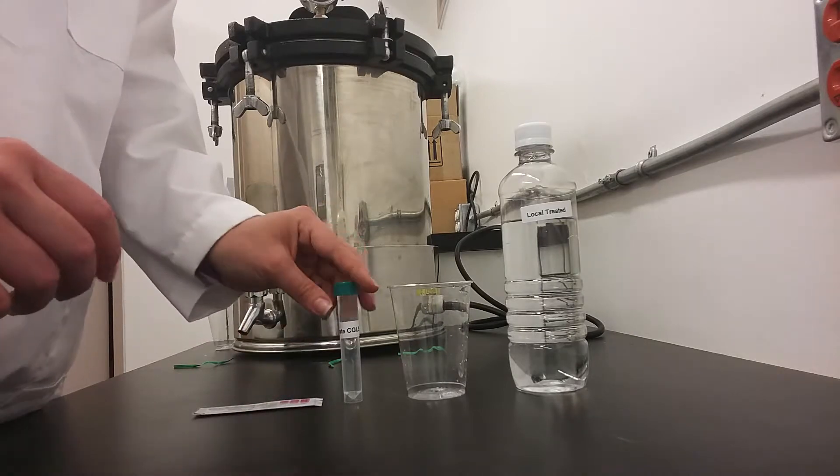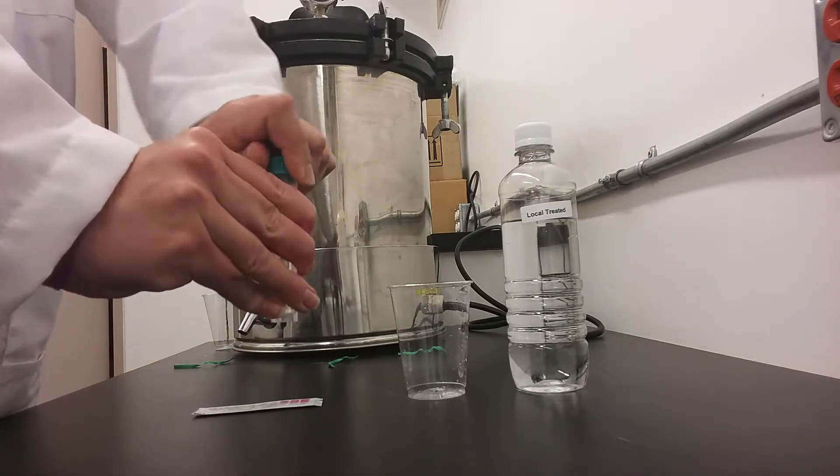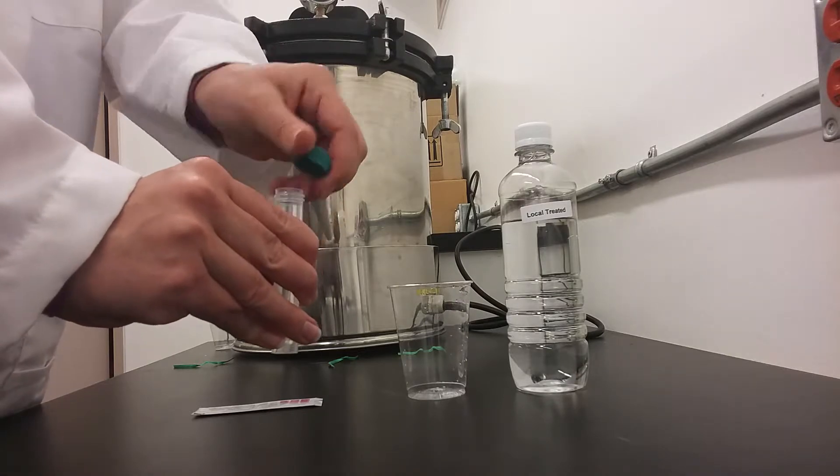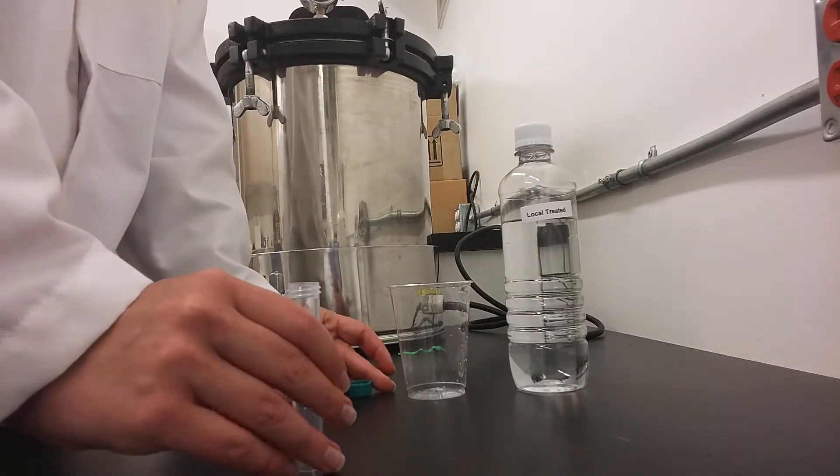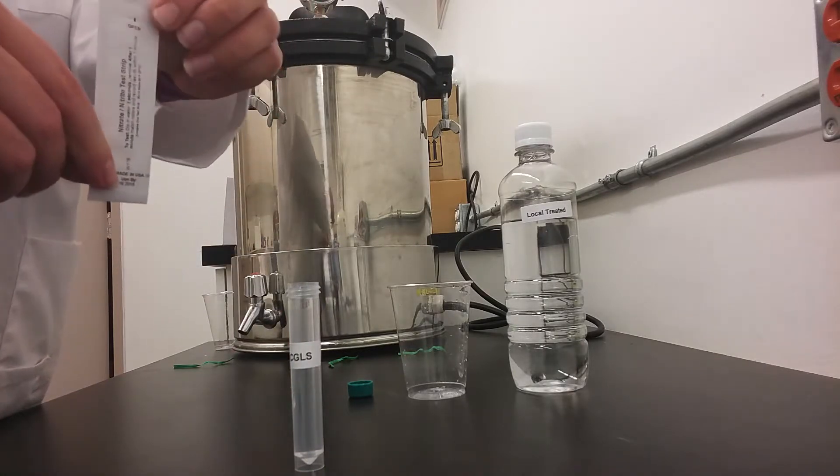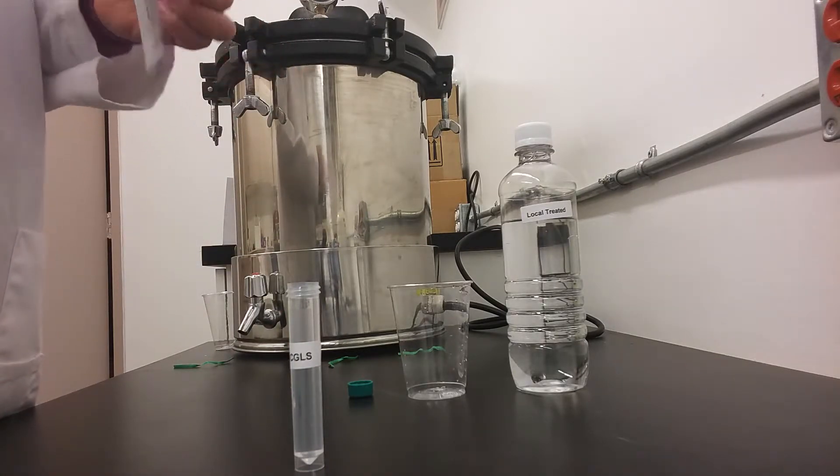For this test, you will simply open the Nitrate Canadian guideline sample water. Then you will open the test strip from the side that says 'open', being careful not to touch the indicator pad at the bottom of the strip.